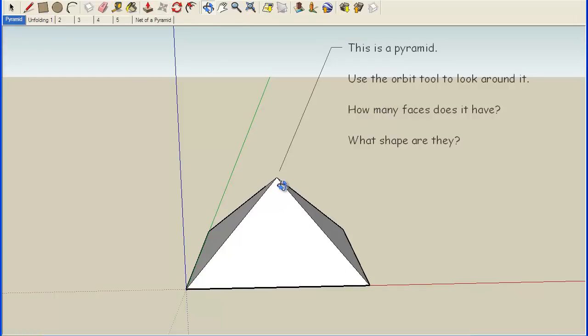This is a right pyramid. It's actually a regular pyramid because my base is a regular square. A square is a regular polygon, so that means I have a regular pyramid.